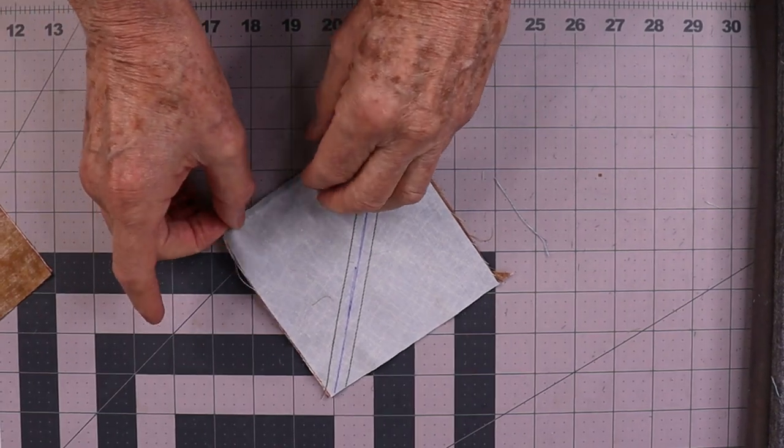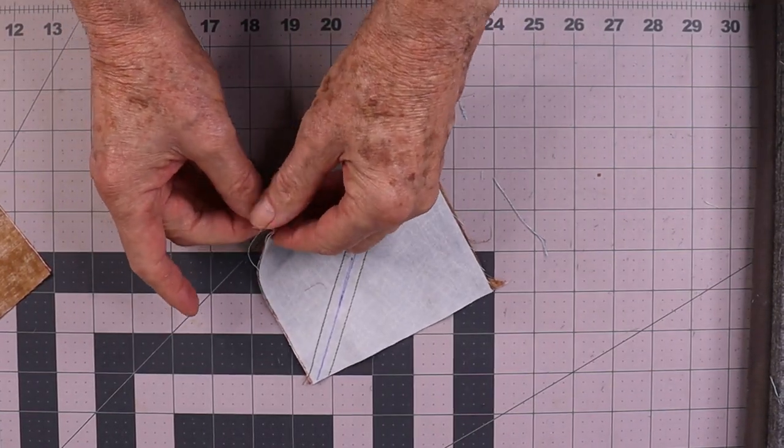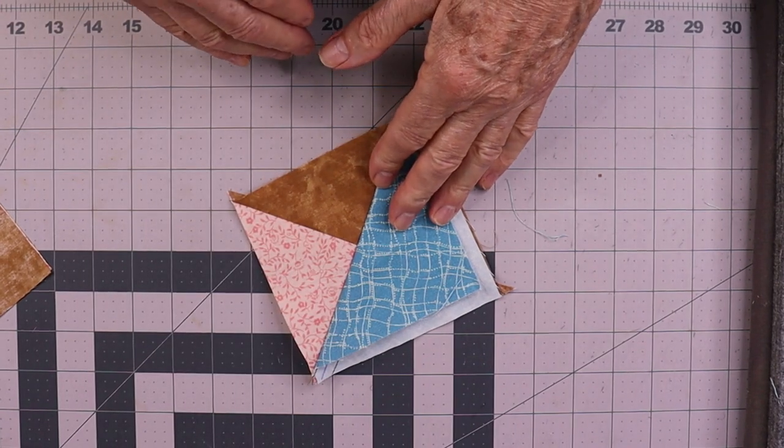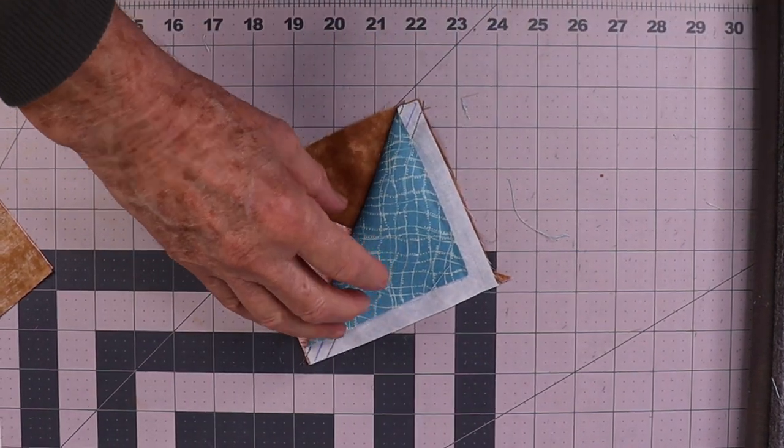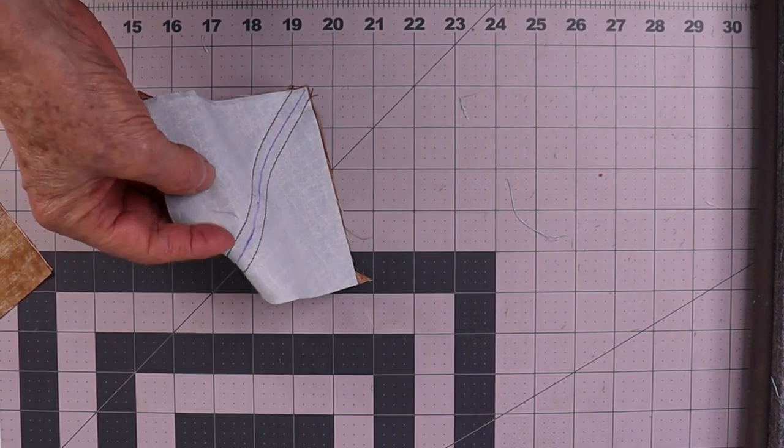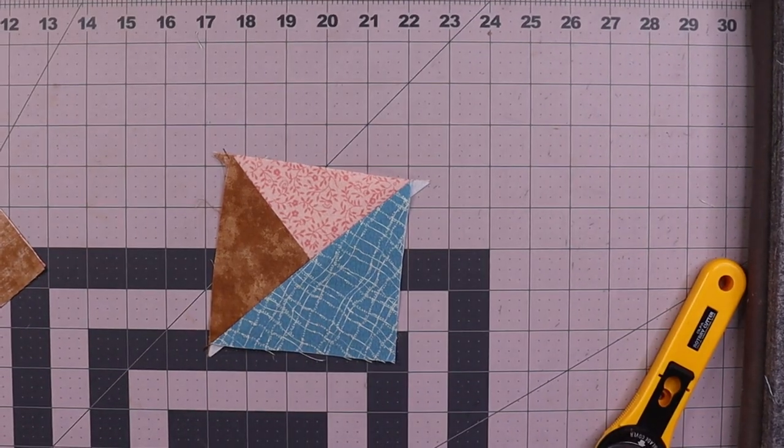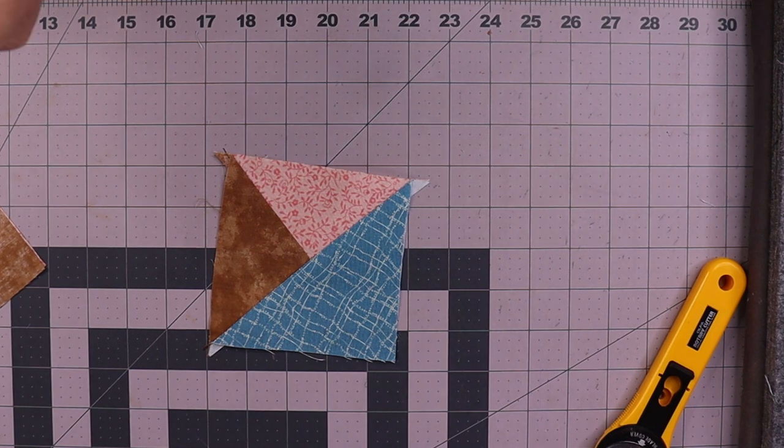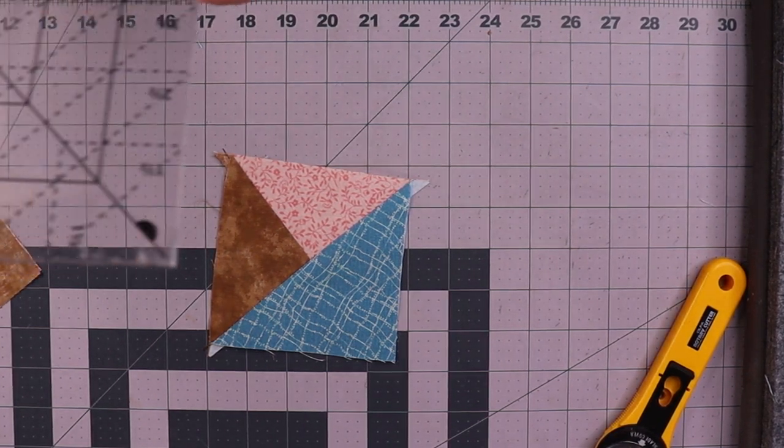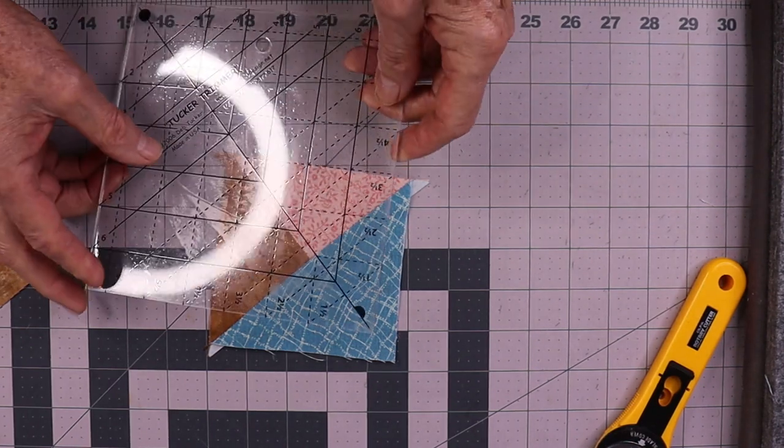There, that's done. Now I've just got to cut it down and we've got two units. I'll just press and cut it. Now I'll cut and press it. There, I pressed it to the large side once again. And tucker trimmer again, trim it down to four and a half.